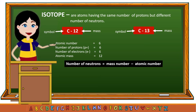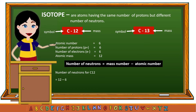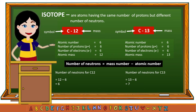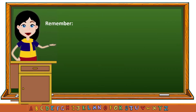To find the number of neutrons, subtract the atomic number from the atomic mass. Since the atomic mass of carbon-12 is 12 and the atomic number is 6, 12 minus 6 equals 6. Therefore, the number of neutrons of C-12 is 6. For C-13, the atomic mass 13 minus the atomic number 6 equals 7. Therefore, the number of neutrons of C-13 is 7.